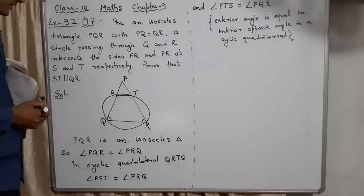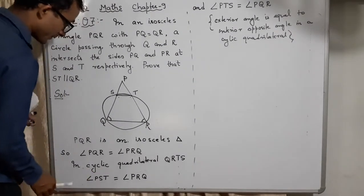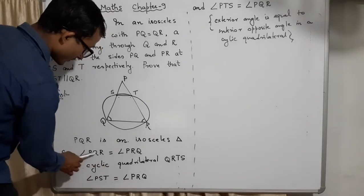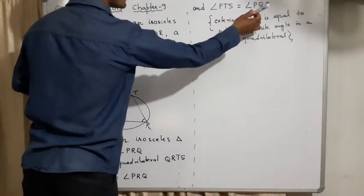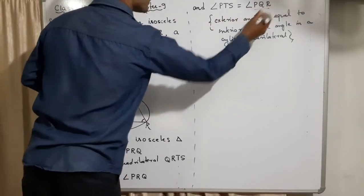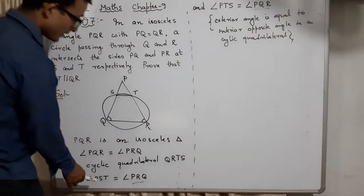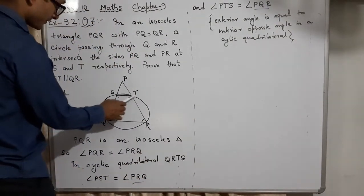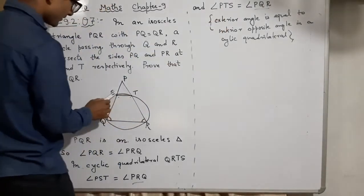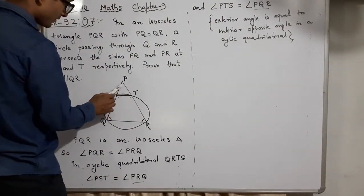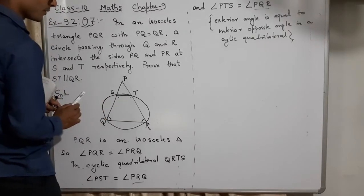Also, we know that angle PQR and angle PRQ are equal — since PQR is an isosceles triangle. PQR is this angle, PRQ is this angle, and these are already equal. So what happened: PST will be equal to PTS as well, since both equal their respective base angles.